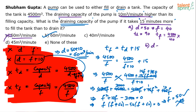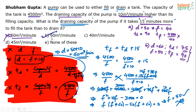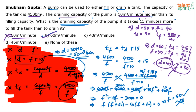Option B says D equals 60, implying filling capacity is 50. Time taken to drain equals 4500 by 60 equals 75 minutes. Time taken to fill equals 4500 by 50 equals 90 minutes. The difference is 90 minus 75 equals 15 minutes — exactly as given. So option B is the answer. For option C, draining capacity is 40 and filling capacity is 30: 4500 by 40 gives a non-integer, so the difference cannot be an integer, and option C is ruled out.